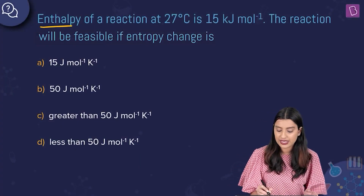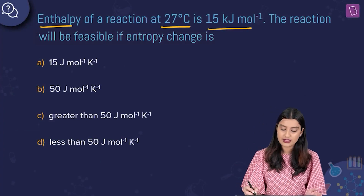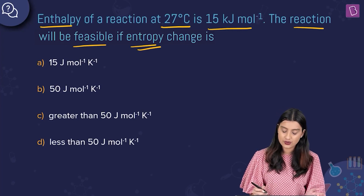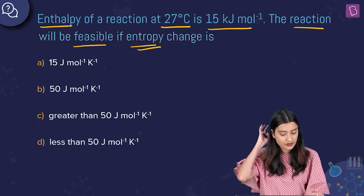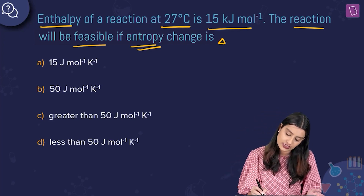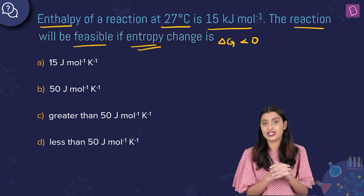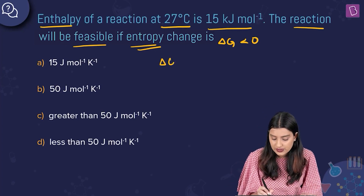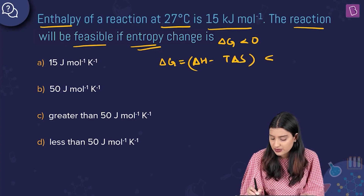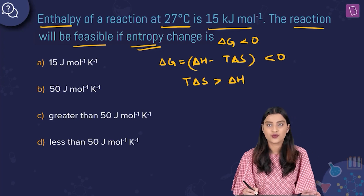The enthalpy of a reaction at 27°C is 15 kJ/mol. For what entropy value will the reaction be feasible? For a reaction to be feasible, ΔG must be less than 0. Since ΔG = ΔH − TΔS, we need TΔS > ΔH.